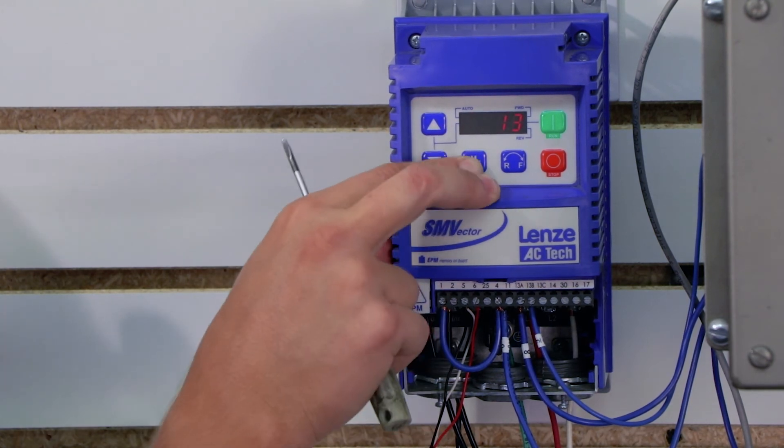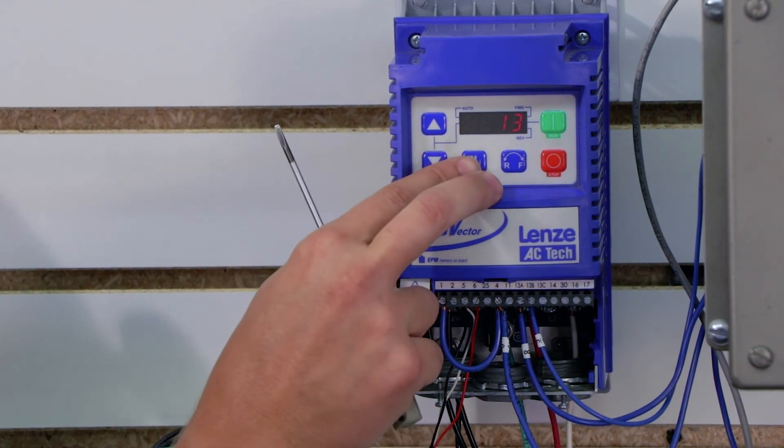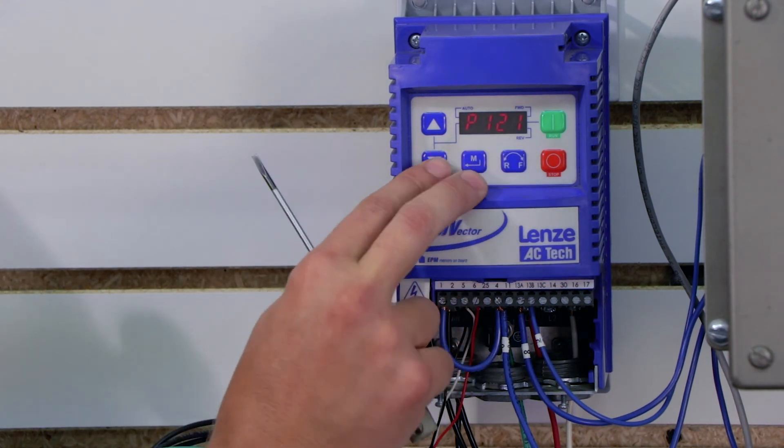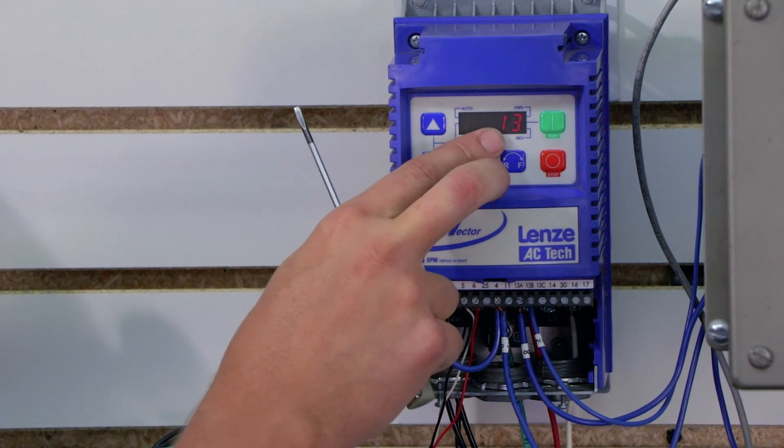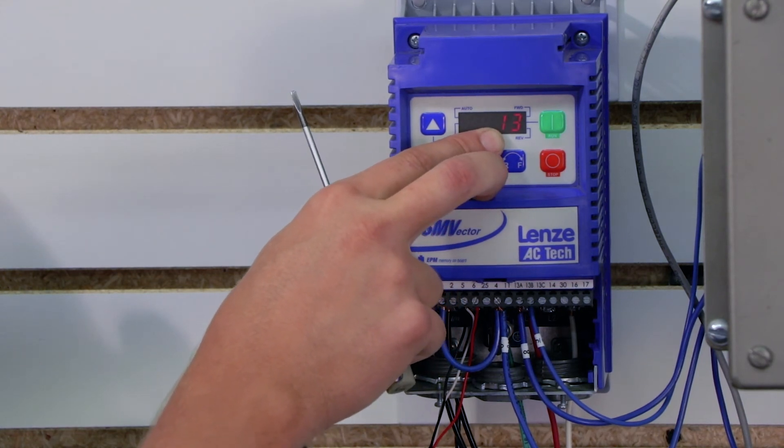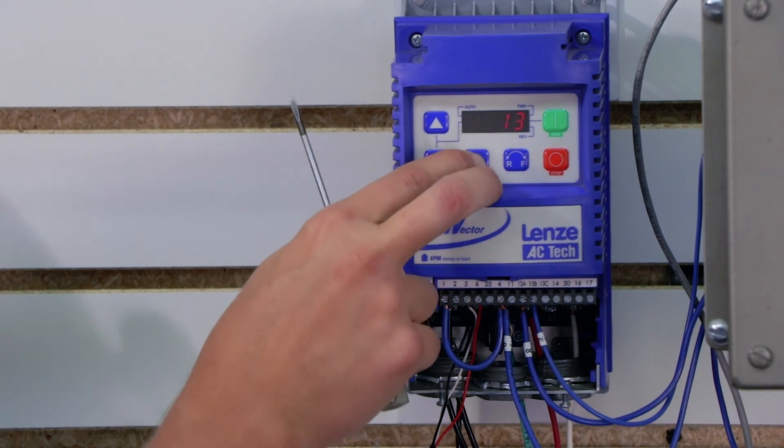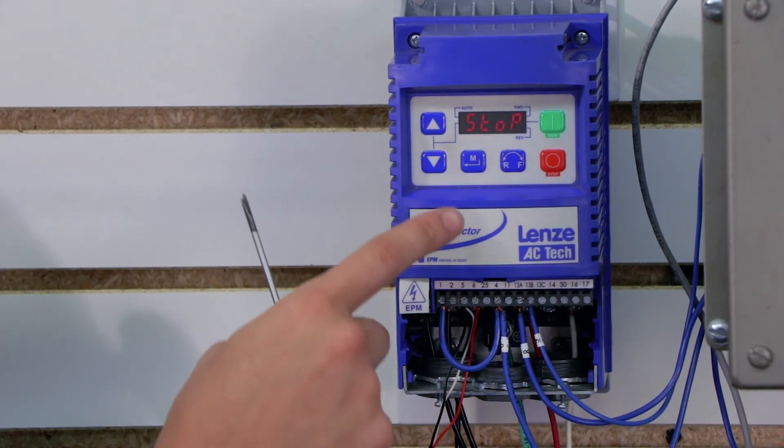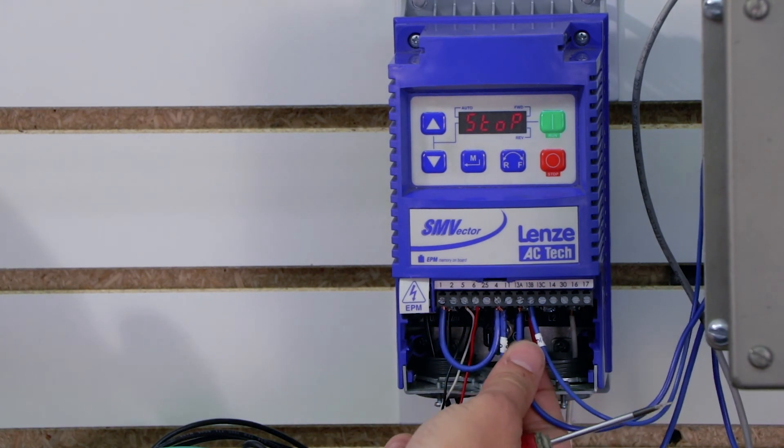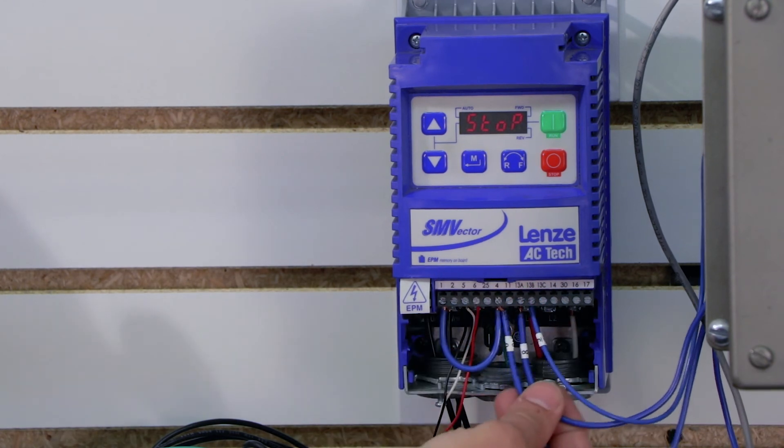Now this is the parameter that programs this 13a input. I'm going to set this to 13 which actually means run forward. When you're using push buttons you want to set that to start forward which is 11 which waits for a momentary connection of electricity. 13 or run forward requires that electricity is constantly flowing between 4 and 13a for it to keep running forward. That's how when we turn off the selector switch the drive will turn off.